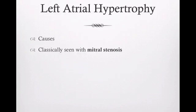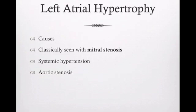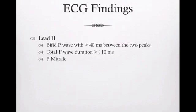Moving on to left atrial hypertrophy - we need to know causes. Just like right atrial hypertrophy is classically seen with tricuspid stenosis, left atrial hypertrophy is classically seen with mitral stenosis. For FPC exams, know this will probably be associated with a heart murmur or a click. You'll also see it with systemic hypertension, aortic stenosis, and on your FPC exam you're always worried about hypertrophic cardiomyopathy, which is the number one cause of death in young athletes who drop dead of sudden cardiac arrest.